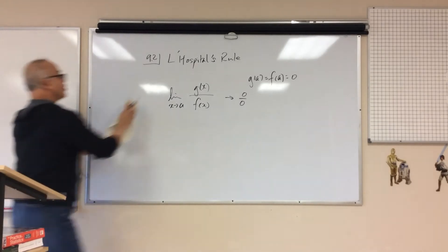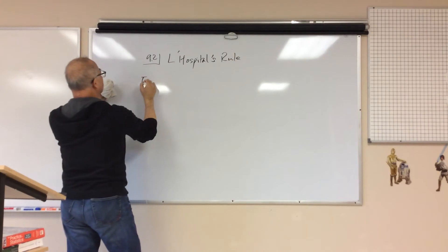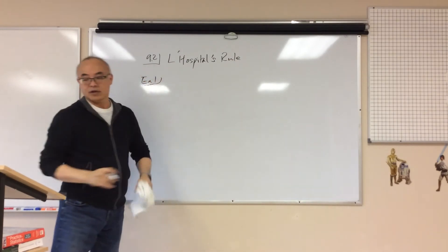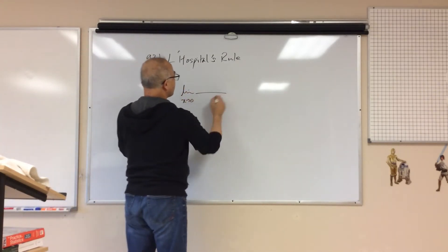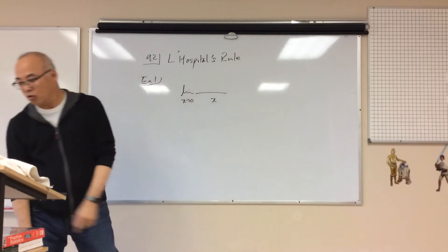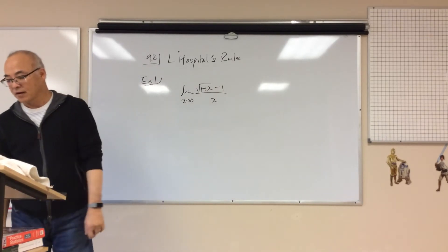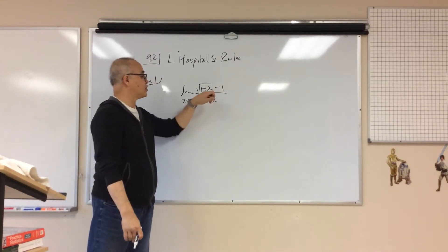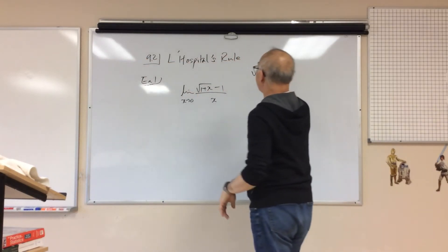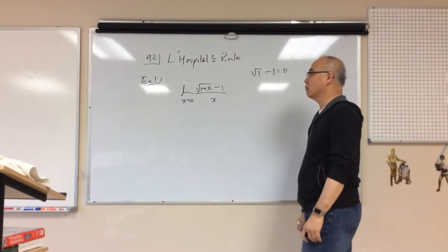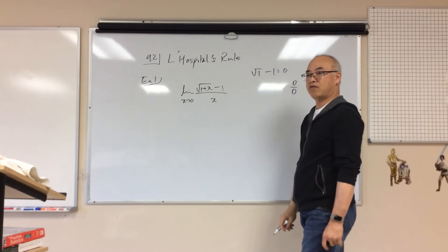Let's do example number 1: find the limit as x approaches 0 of x over (√(1+x) − 1). If I put 0 on the top, I get √1 − 1, which goes to 0. If I put 0 on the bottom, I also get 0. So this is definitely a 0 over 0 form.